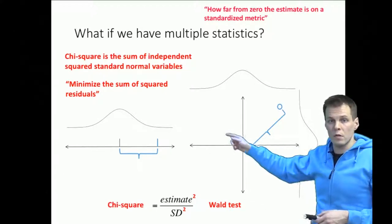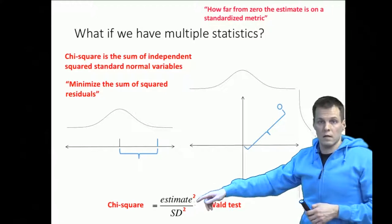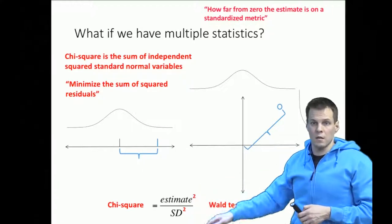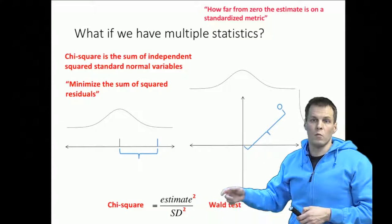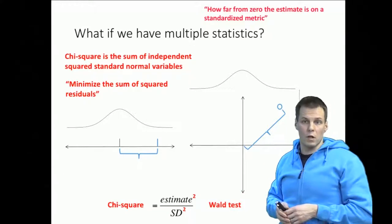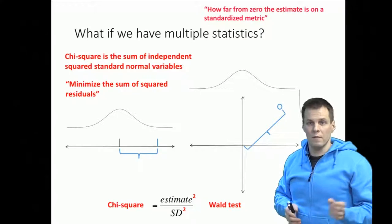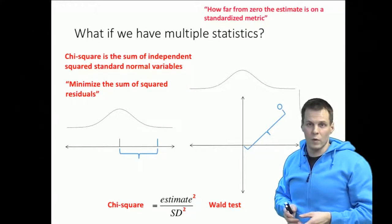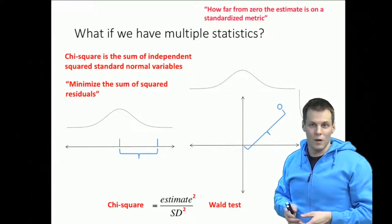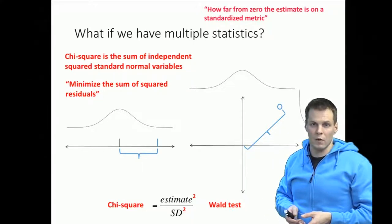So if you have two variables then the sum of squares of the estimates divided by the standard error squared will follow chi-square with two degrees of freedom. If you have three variables the sum of squares divided by the standard errors will follow chi-square with three degrees of freedom. So that's the basics of chi-square testing.